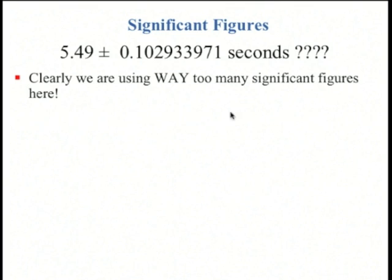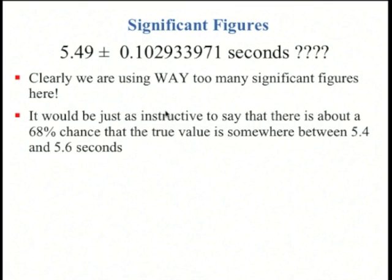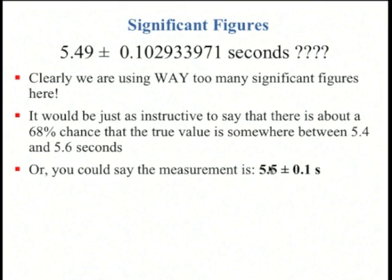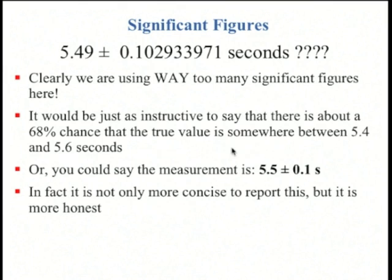Clearly, we're using way too many significant figures here if we're just trying to describe an estimate of the range of what we would measure. It's just as instructive and actually a little better to say that the number is somewhere between 5.49 minus 0.1 and 5.49 plus 0.1, so somewhere between about 5.4 and 5.6. Or you could just say the measurement is 5.5 plus or minus 0.1. That's the best way to write it. It's not just more concise than writing this thing above, it's more honest.